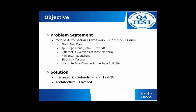Objective. Problem statement: mobile automation frameworks come with common issues like static data, wherein the data is always static and doesn't have dynamic data. App dependencies — few apps are native and few are hybrid, and we don't have a single framework to address this. Different OS versions, like Unix with different flavors and Windows with different versions. Non-internationalization — most frameworks don't address multiple languages. General frameworks are black box testing, but here we are going to have white box testing as well. The UI changes regularly whenever development is going on phase by phase, and that is also addressed here.